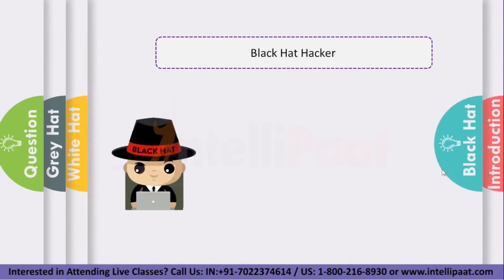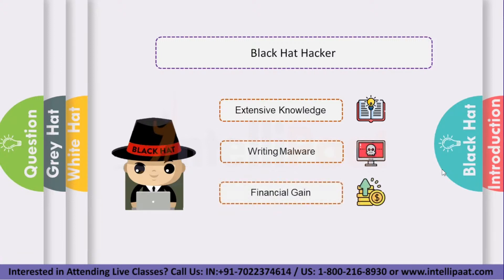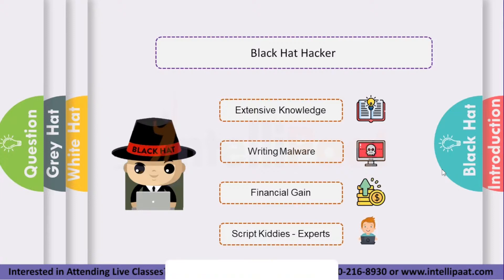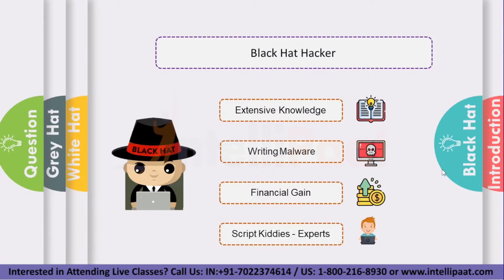What is a black hat hacker? Like all hackers, black hat hackers usually have extensive knowledge about breaking into computer networks and bypassing security protocols. They are also responsible for writing malware, which is a method used to gain access to these systems. Their primary motivation is usually for personal or financial gain, but they can also be involved in cyber espionage, protest, or perhaps are just addicted to the thrill of cyber crime. Black hat hackers can range from amateurs spreading malware like script kiddies to experienced hackers that aim to steal data — specifically financial information, personal information and login credentials. They also seek to modify or destroy data as well.